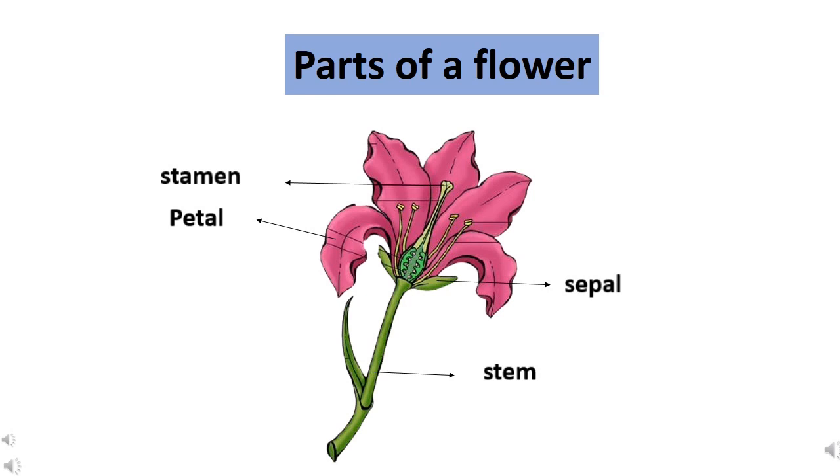Stem, sepal, petal and stamen. These are the parts of a flower.